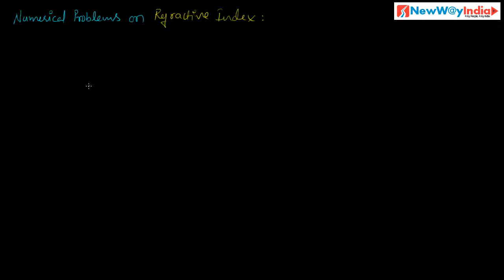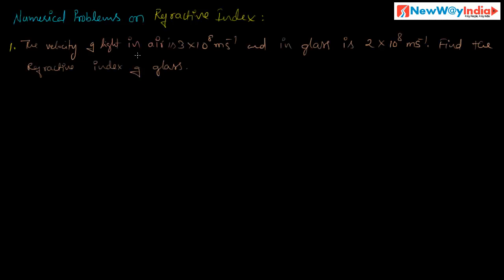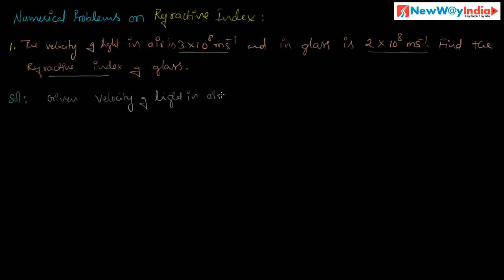Let us discuss numerical problems on refractive index. Problem one: the velocity of light in air is 3×10⁸ meter per second and velocity of light in glass is 2×10⁸ meter per second. Find the refractive index of the glass. Given: velocity of light in air or vacuum is equal to 3×10⁸ m/s, and velocity of light in glass is equal to 2×10⁸ m/s.